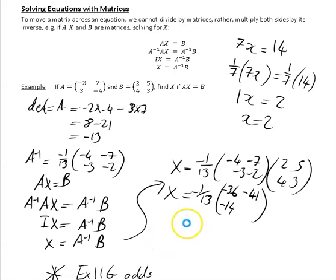And the last element is going to be our second row, second column. So second row times the second column. -3 times 5, -15. -2 times 3, -6. So that's going to be -21.